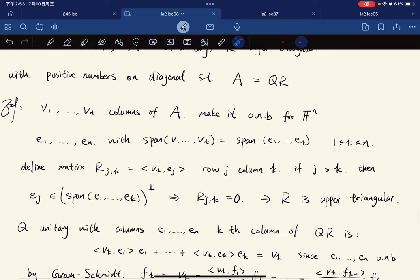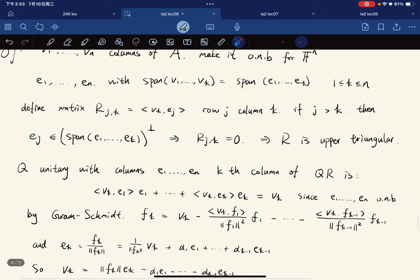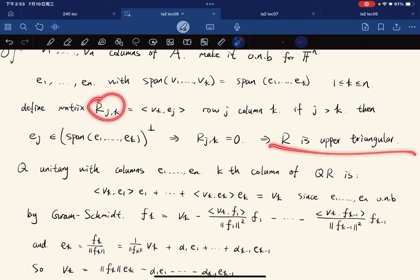We let v₁ to v_n be the columns of A, make an orthonormal basis with Gram-Schmidt. Now this is true for all of them, and we define matrix R_jk to be this. You should verify that R_jk is upper triangular, and we let Q be the unitary matrix with columns e₁ to e_n.